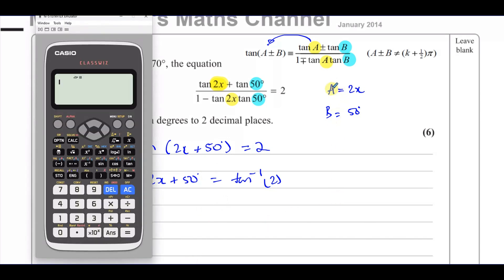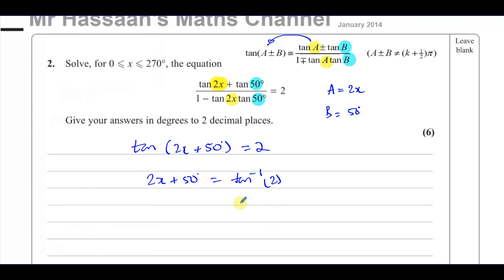We have to make sure that we are in degree mode, which we are. So we say inverse tan of 2, and that gives us 63.4349. Okay, so 2x plus 50 equals.